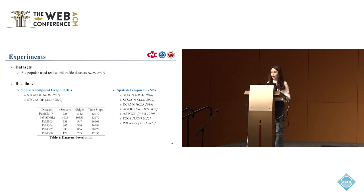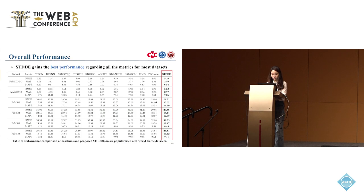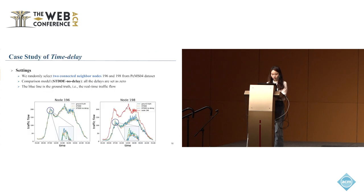Now we come to the experiments part. We first introduce our datasets and experimental settings. We conduct experiments on six popular real-world traffic datasets. We compare our model with two kinds of baselines: the first is spatial-temporal graph ODEs, and the second is spatial-temporal graph neural networks. We first introduce the overall performance. As we can see from the table, STDDE gains the best performance on almost all metrics for most datasets.